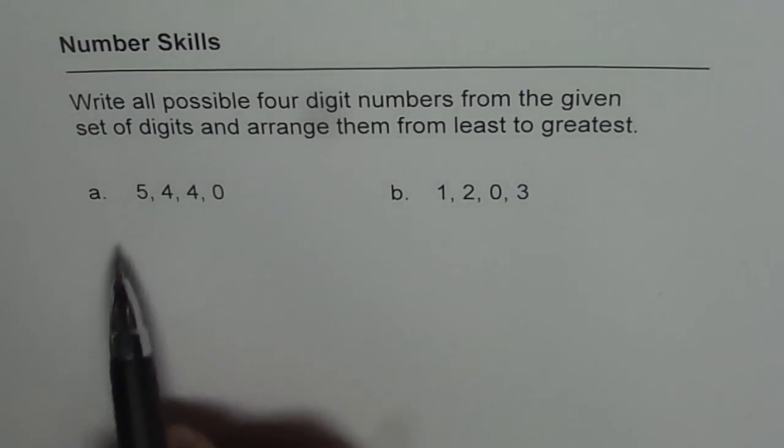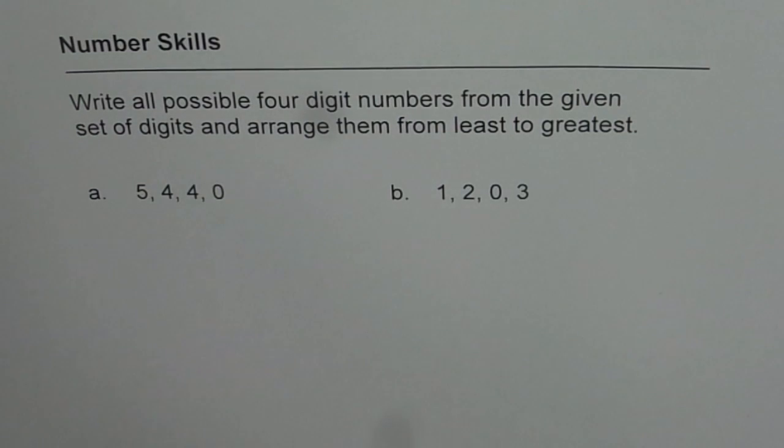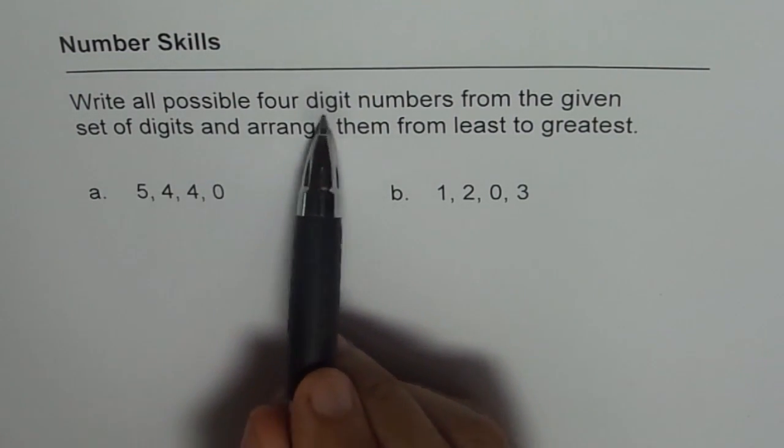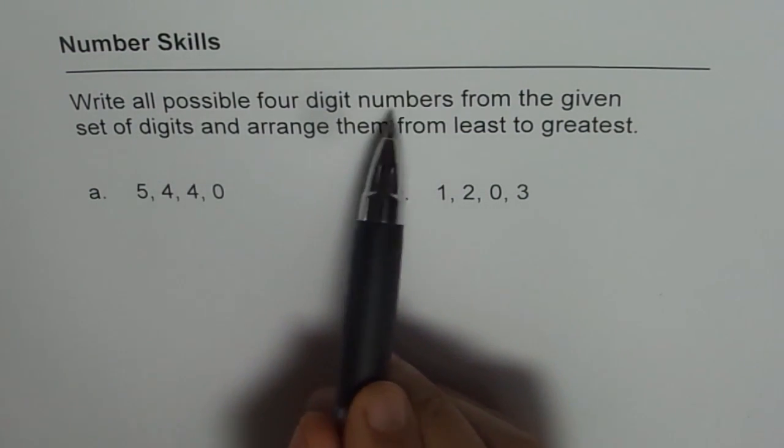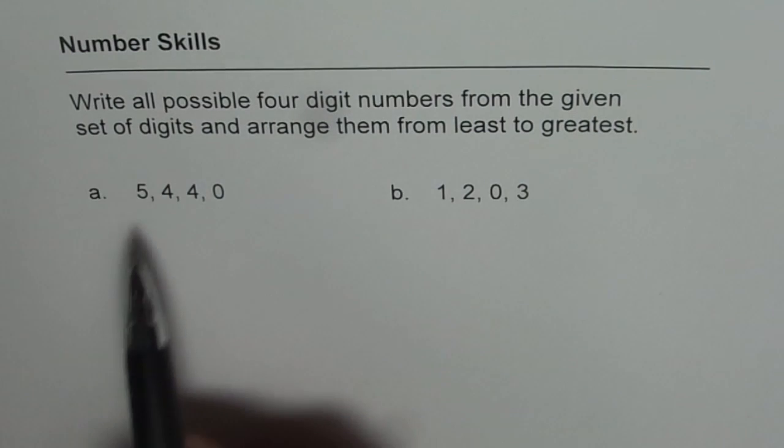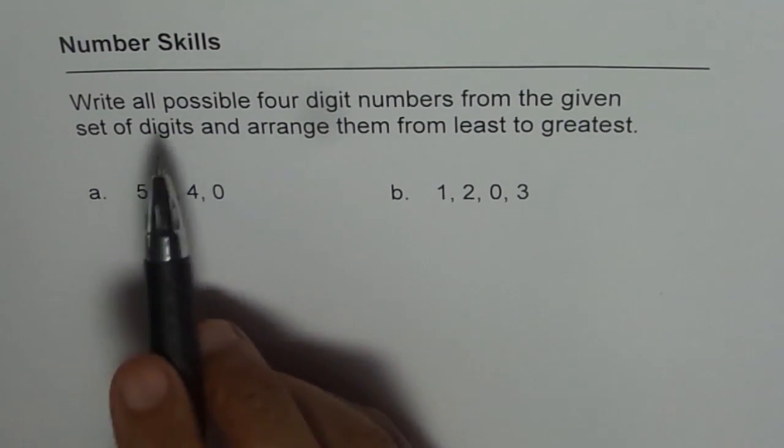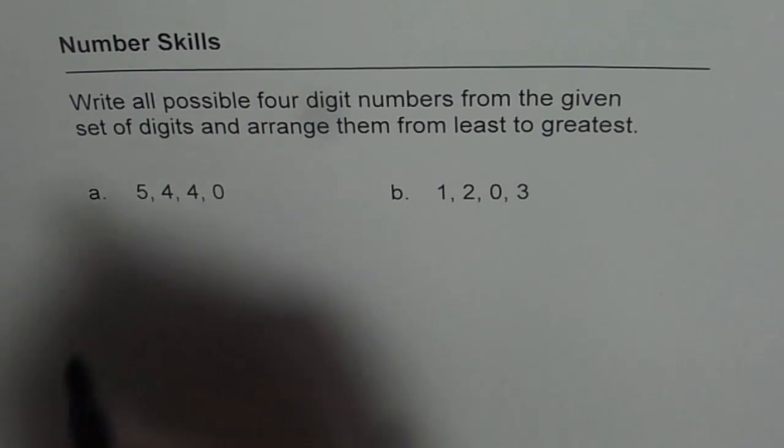So I will do A for you which is 5440 and part B is for you to practice. Let's read the question once again. It says write all possible four digit numbers from the given set of digits using all of them and arrange them from least to greatest. So when you read, read carefully. It is asking you so many things.